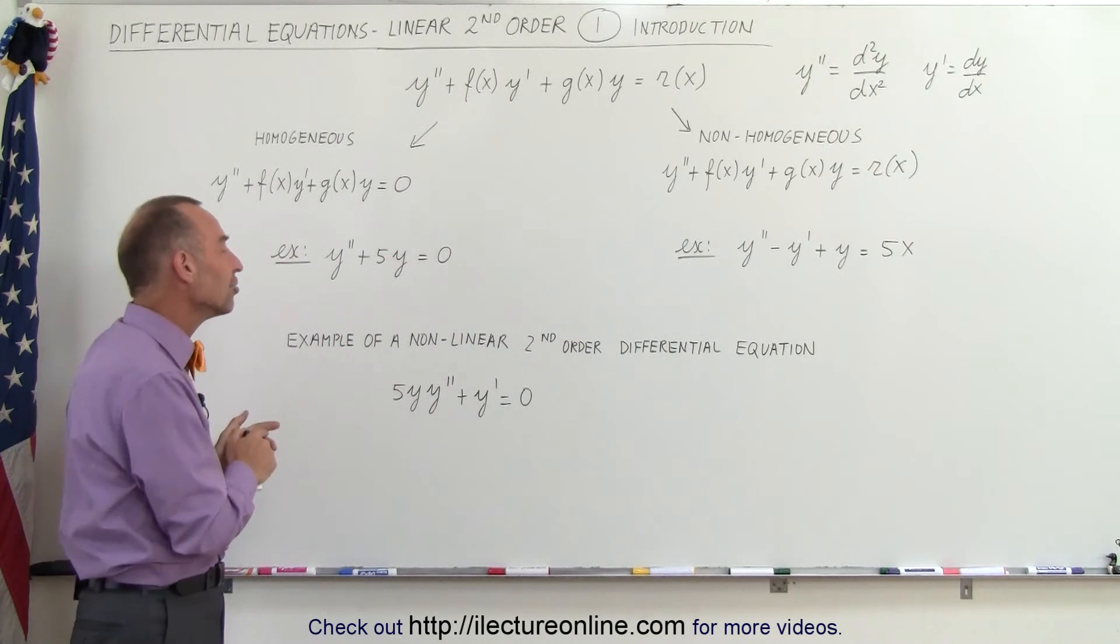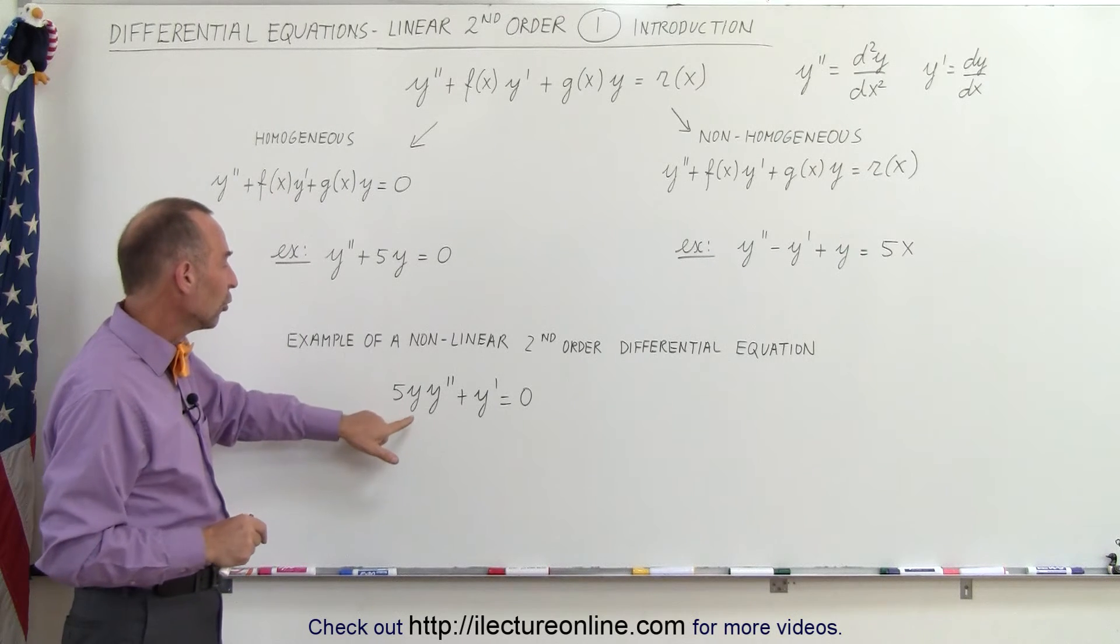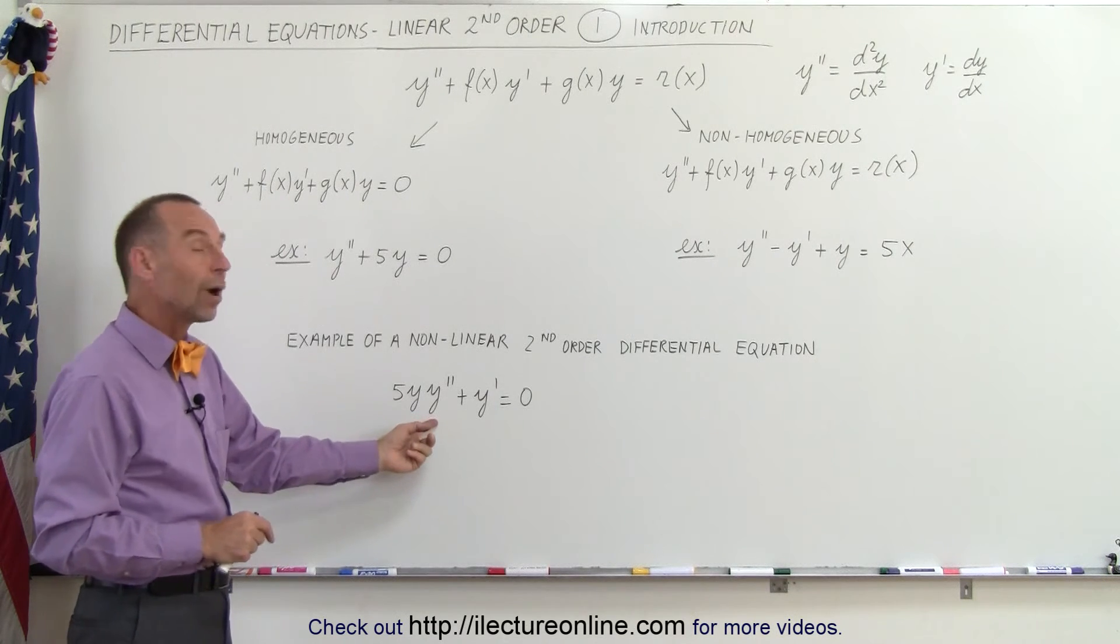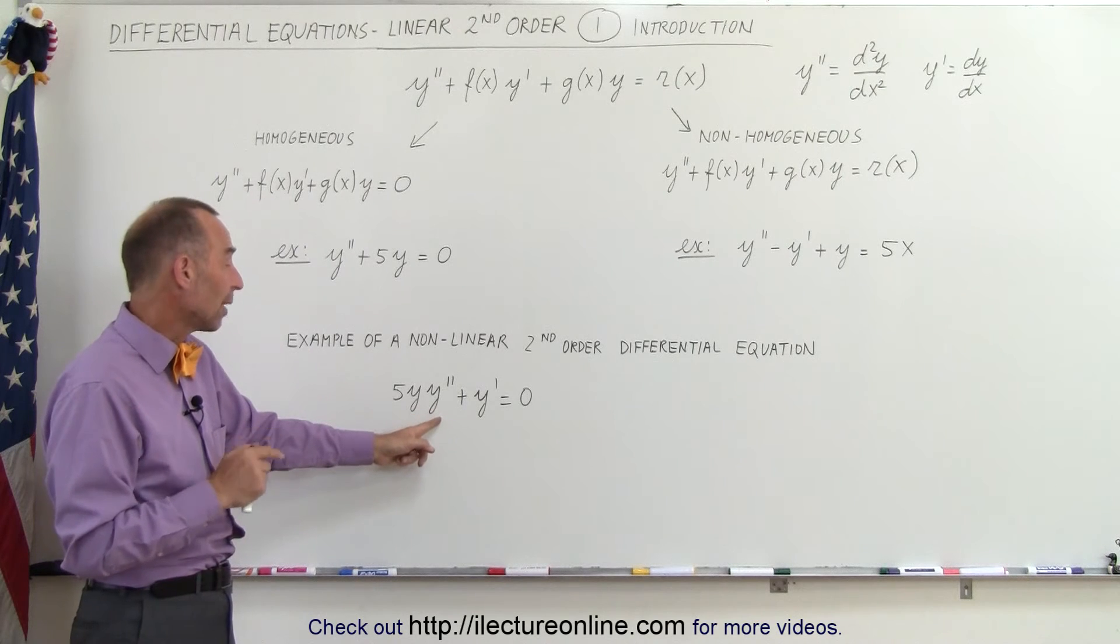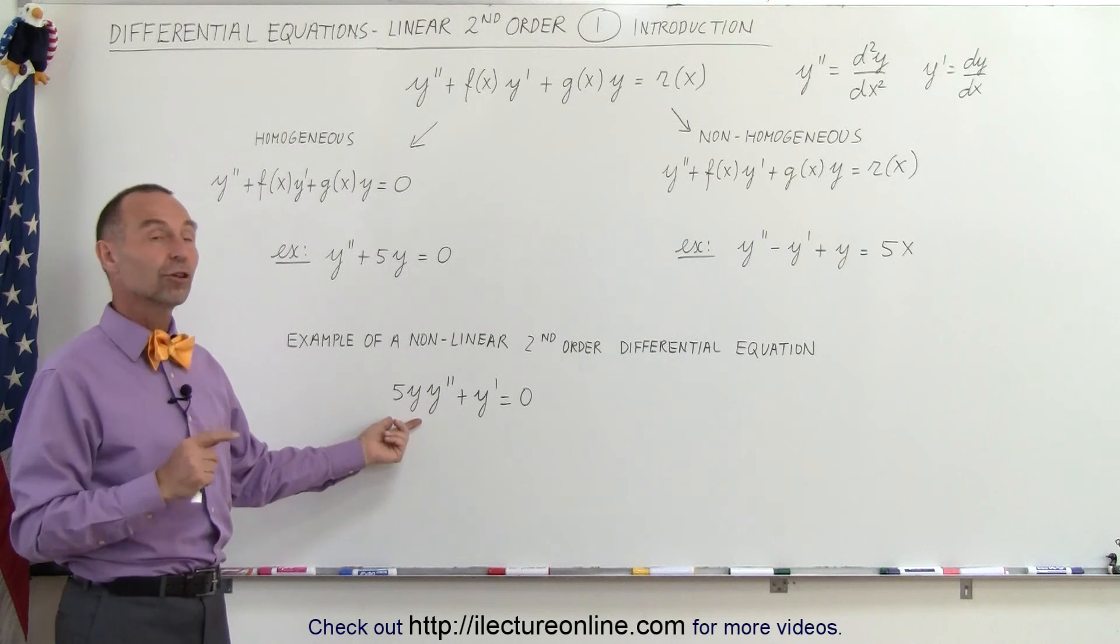Here's an example of a non-linear type, so you can see the difference. Notice that the function in front of the y double prime, the second derivative of y respect to x, is not a function of x.